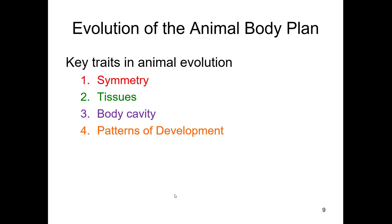The first branch point in the animal kingdom is those animals that have symmetry and those who don't. The second split point will be tissues, and we'll define what tissues are. The third point is going to be type of body cavity, and then patterns of development. These are in order, the way they appear, earliest being symmetry and then moving forward to patterns of development.